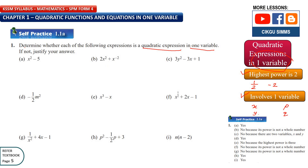Let's see question 1a: x squared minus 5. The highest power is 2 and it has only one variable which is x, so yes, this is a quadratic expression. For 1b, the power is 2 but it is negative 2, so no — this is not a quadratic expression because that power is not a whole number.